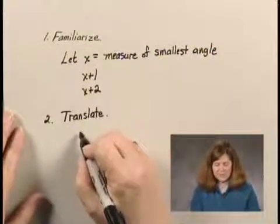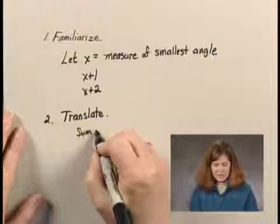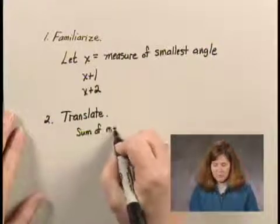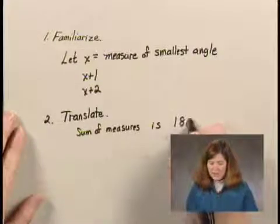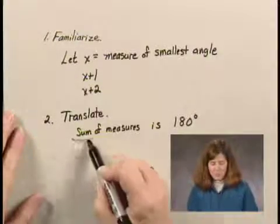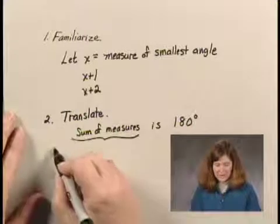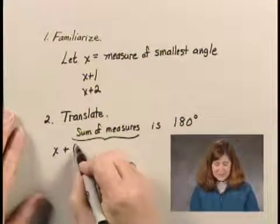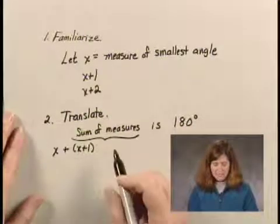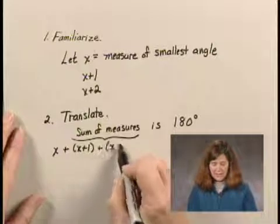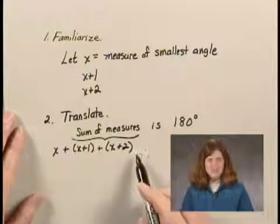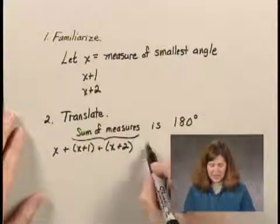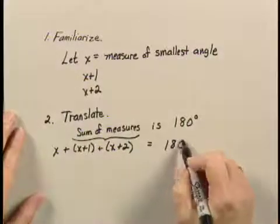Since we know the sum of the measures of the angles is 180 degrees, we can write this as x plus x plus 1 plus x plus 2. Again, we don't know any of those, but we've given a variable that describes them, and that equals 180.